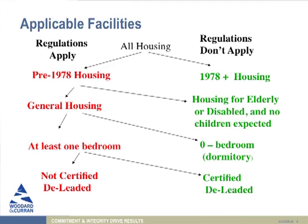This is a quick flow chart that tries to parse the definition in a more friendly, easy-to-read way. We're always looking to figure out where children may be living and where they could be exposed to lead paint. We start with all housing. Anything built in 1978 or later — the regulations no longer apply, that's clean, don't worry about it. We're only going to focus on things from earlier than 1978. Within that pre-1978 housing, there are two categories: housing built for the elderly or disabled where no children are expected to live — don't worry about it — and general housing.